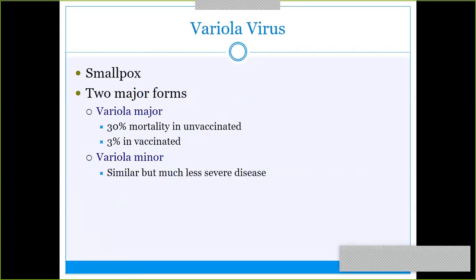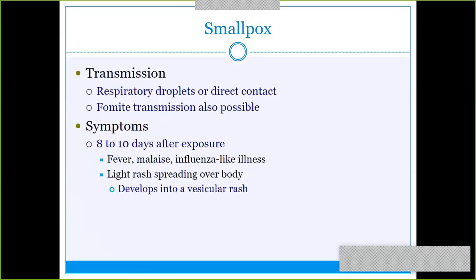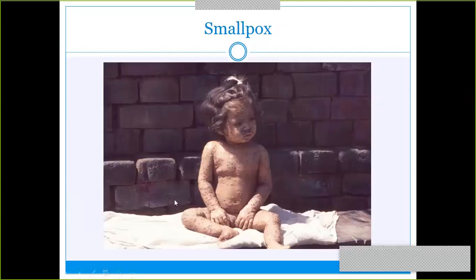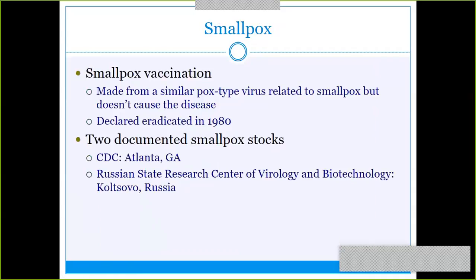Variola virus causes smallpox. Variola major is the more dangerous form with 30% mortality in the unvaccinated. We no longer have the vaccine because smallpox was eradicated in 1980, so the only way smallpox would appear now is through a bioterrorism event. If someone gets it, it is easily transmissible through respiratory droplets or direct contact with the vesicular lesions — that fluid is very infectious. The only two documented smallpox stocks are at the CDC and in Russia.